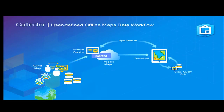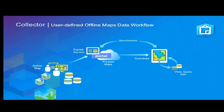The overall flow of working with Collector and its offline capabilities: start with ArcGIS Desktop authoring maps, publish services to ArcGIS Server or Portal/ArcGIS Online, prepare your web map inside your ArcGIS organization, share that map using the concept of groups so multiple users get access, download maps to the device, do your editing, querying, and viewing, then synchronize changes back when you have connectivity. That's the flow of Collector in a nutshell.